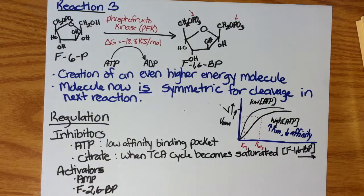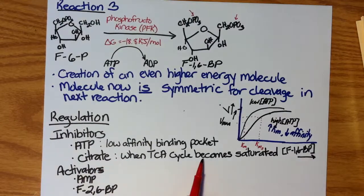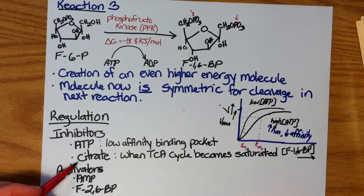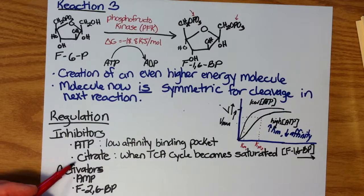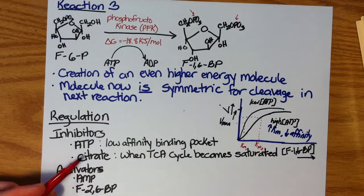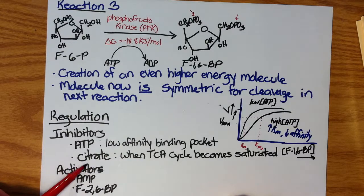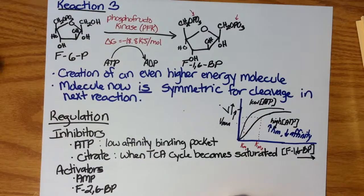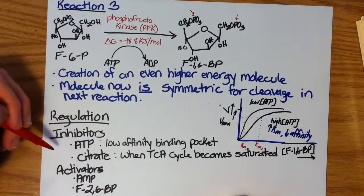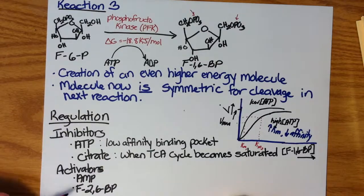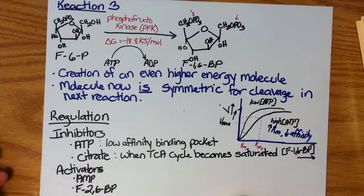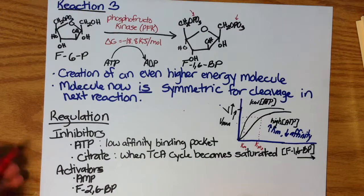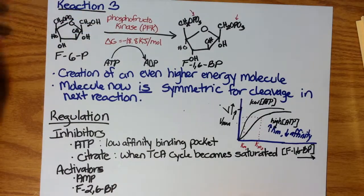The other inhibitor is citrate, which is a downstream metabolic pathway of glycolysis in the citric acid cycle. And when that cycle becomes saturated, you have increased concentrations of citrate. It will bind to the low affinity binding pocket as an allosteric inhibitor of phosphofructokinase. There are also a couple of activators of this pathway. That is AMP and fructose-2,6-bisphosphate. They promote the activity of phosphofructokinase.